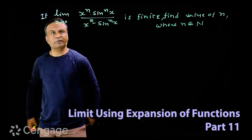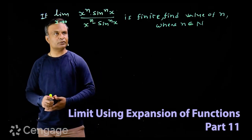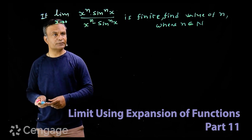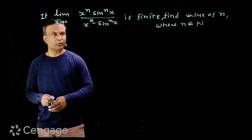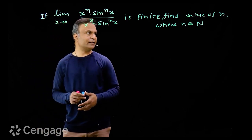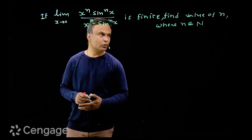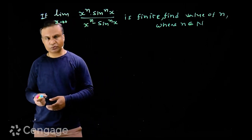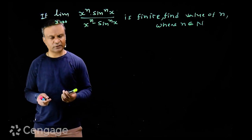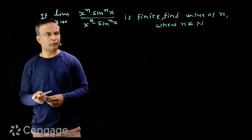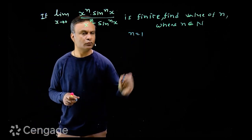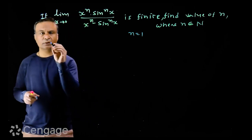We have this question: if the limit as x tends to zero of x^n multiplied by sin^n(x) upon x^n minus sin^n(x) is finite, then find the value of n where n belongs to natural numbers. We can start the question with the least value of n, that is n = 1.